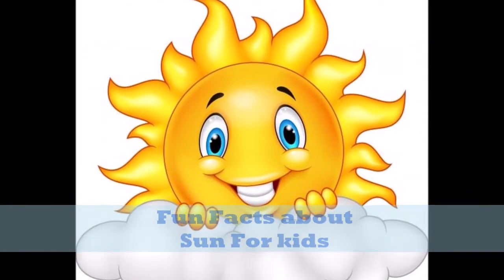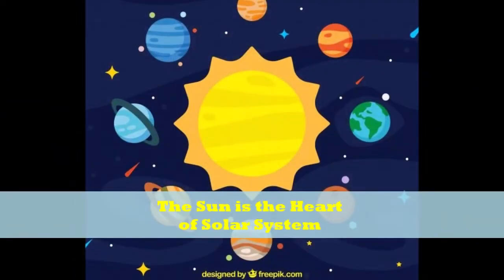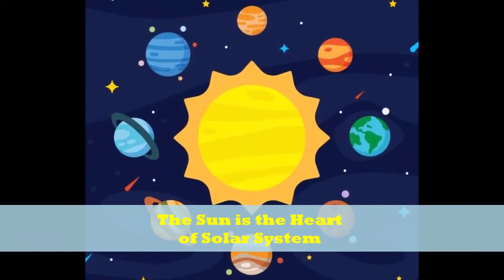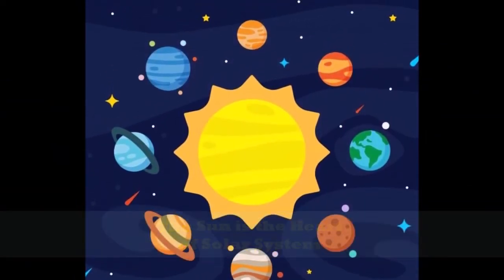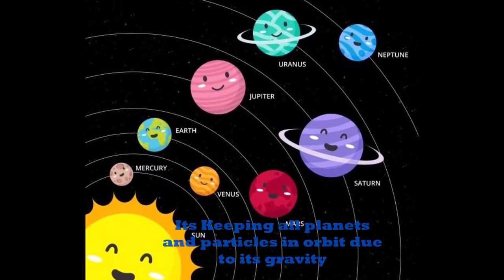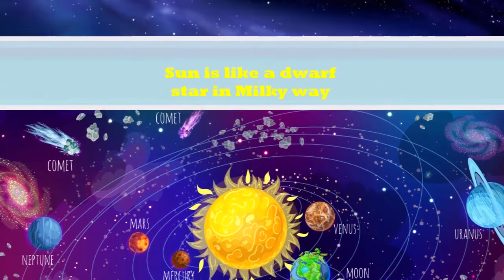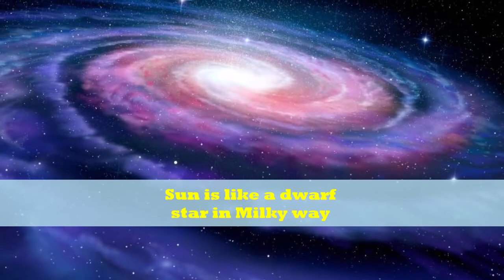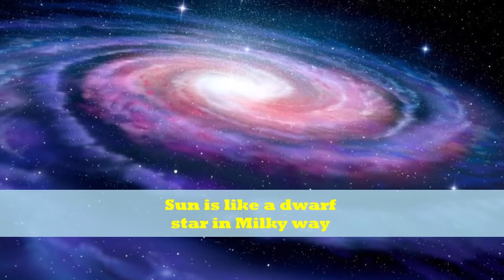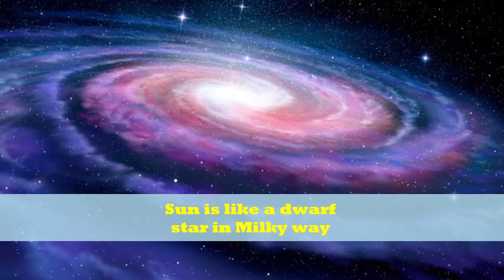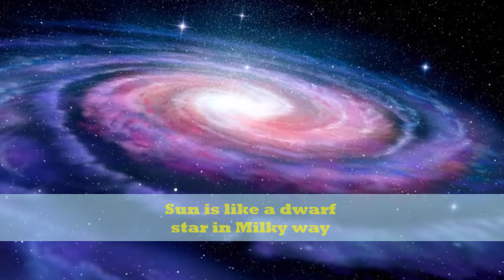Let's start knowing the facts about the sun. The sun is the heart of our solar system and it keeps every planet and particle in orbit due to its gravity. In the Milky Way, this yellow star is just one of billions of dwarf stars like it.